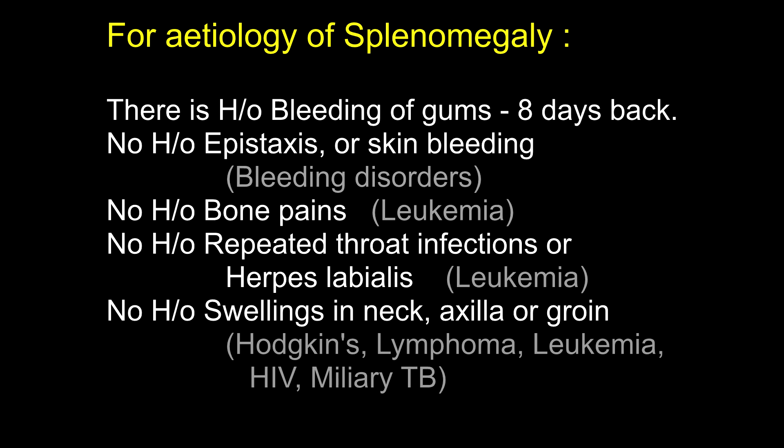There is history of bleeding of gums. No history of epistaxis or skin bleeding, no history of bone pains, no history of repeated throat infections or herpes labialis. What is herpes labialis? It is an eruption of vesicles over the lips due to infection by herpes simplex virus. It is commonly seen in immunocompromised patients like patients with HIV infection, leukemias, patients on steroid therapy, patients with diabetes, lobar pneumonias and typhoid fever.